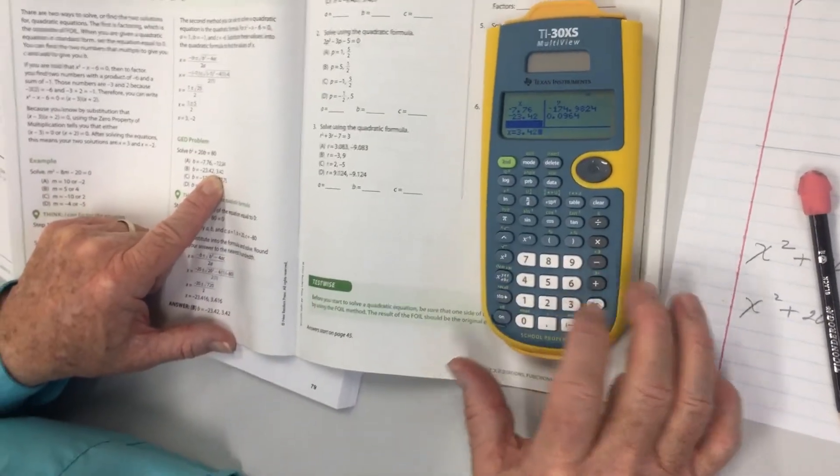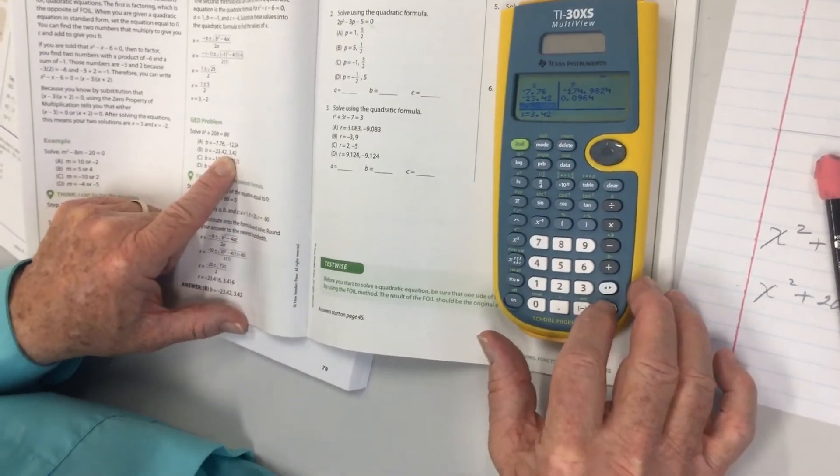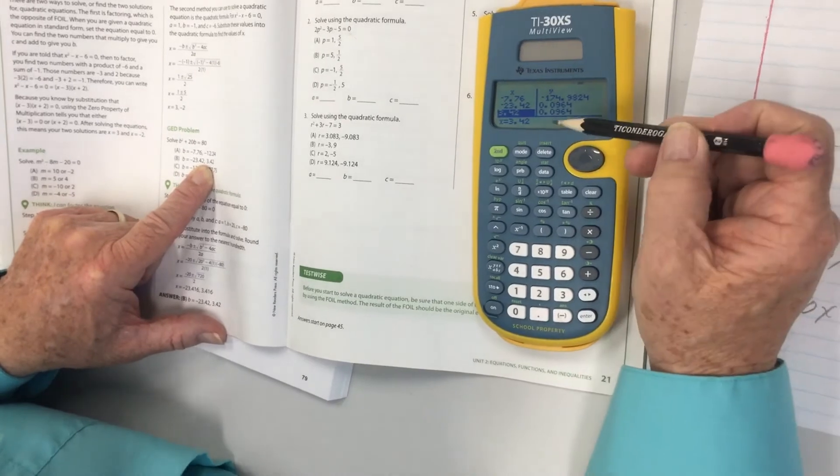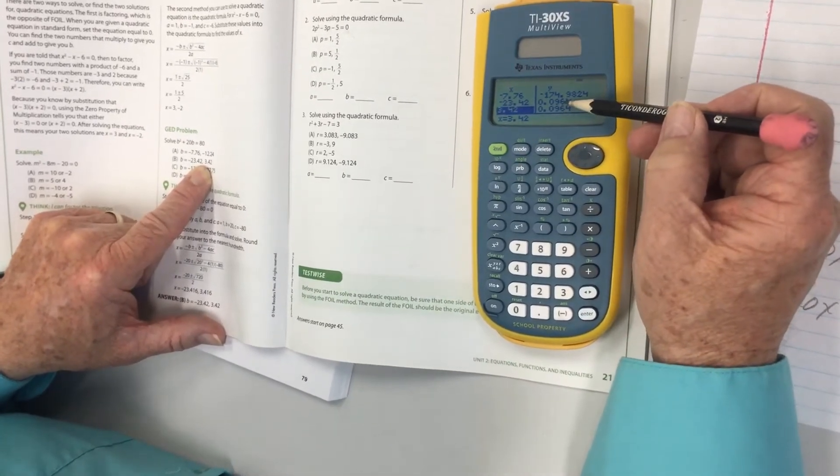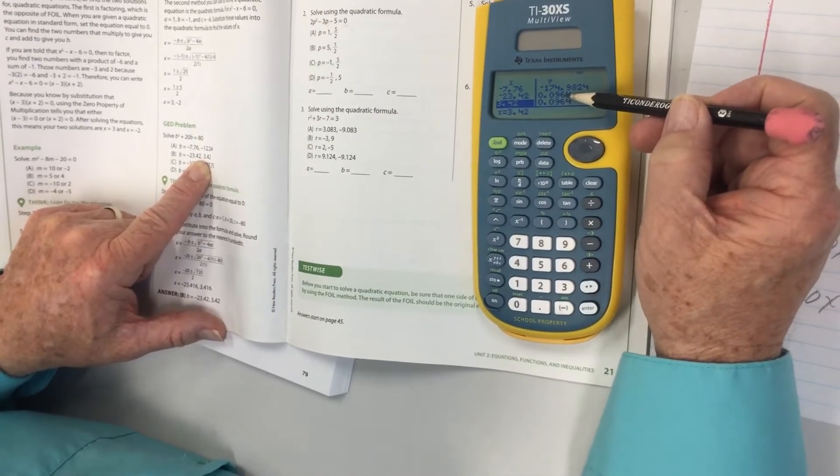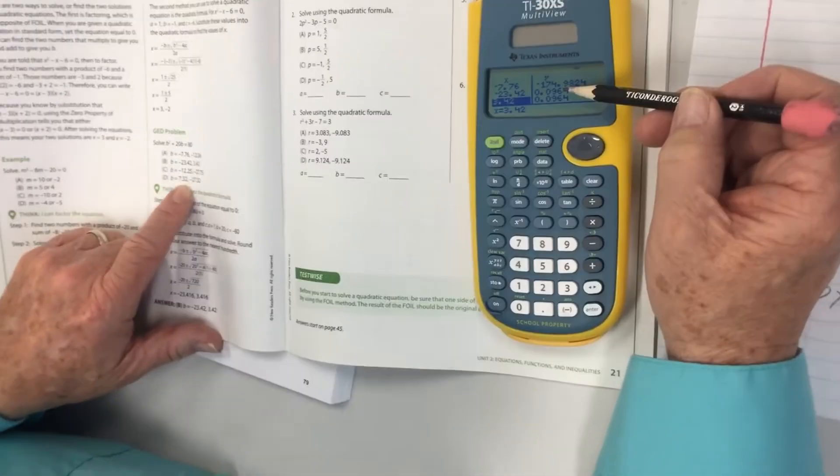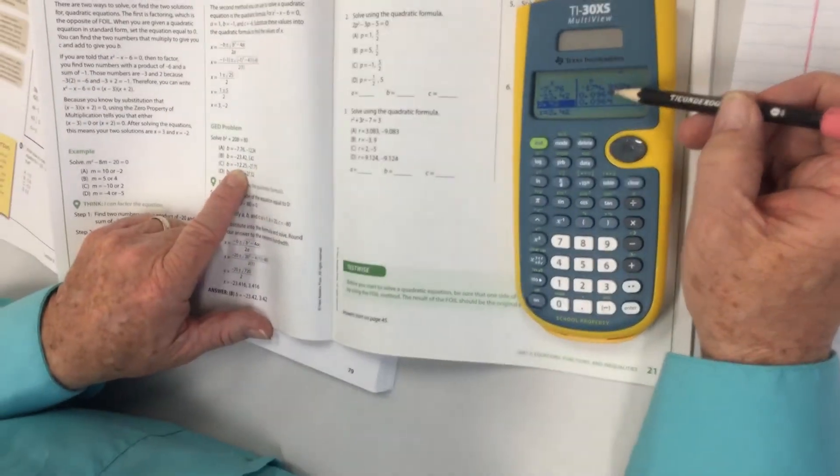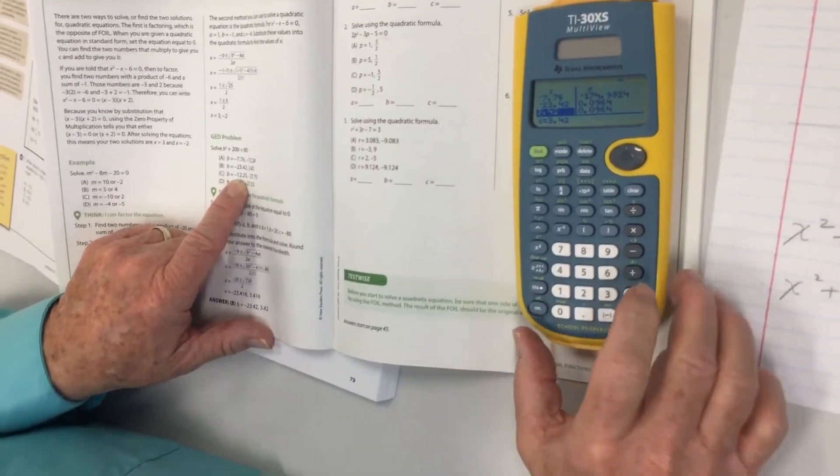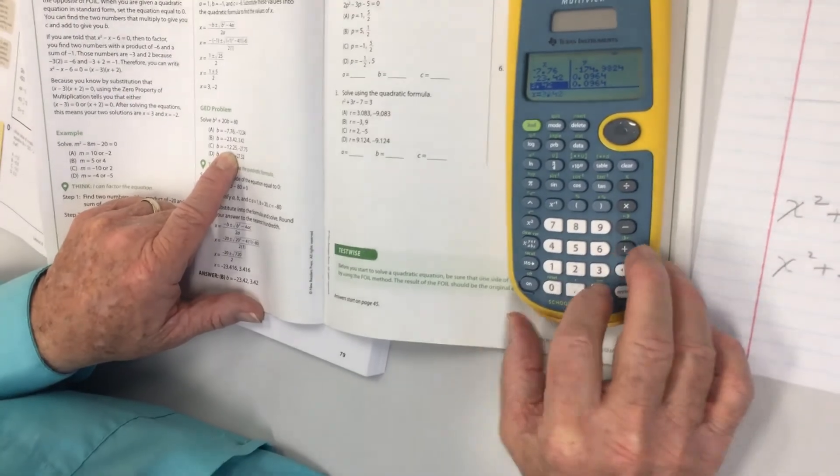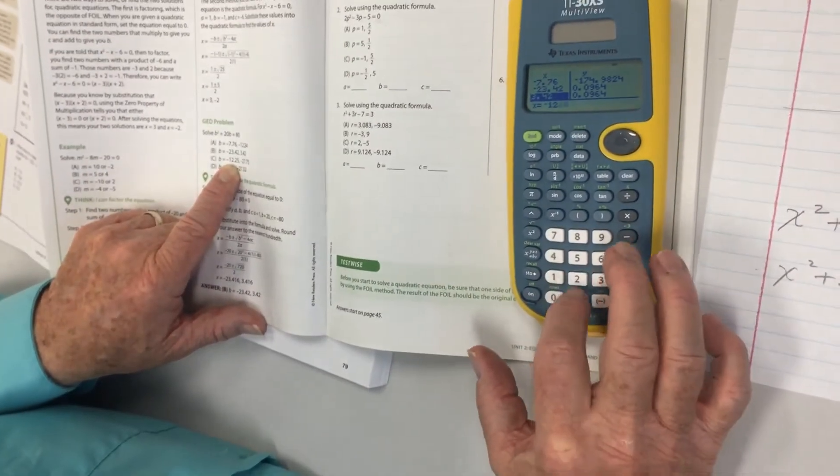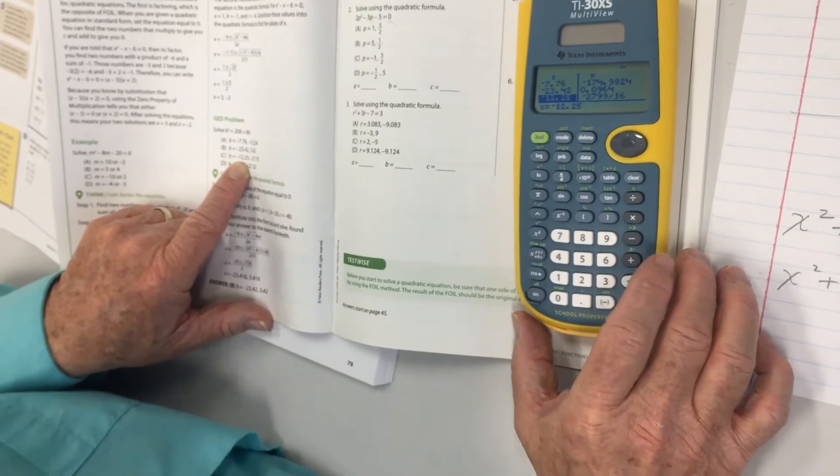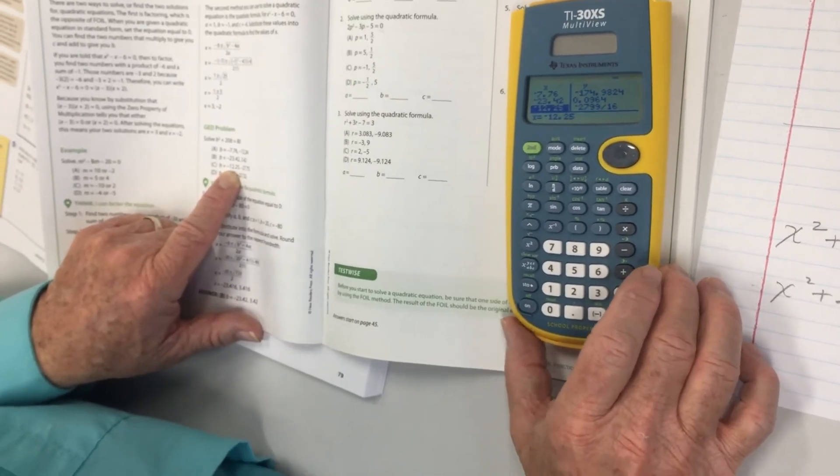Let's go ahead and do a negative 12.25, enter, and that's a, wow, negative 27.99 divided by 16. I don't think that would get it.